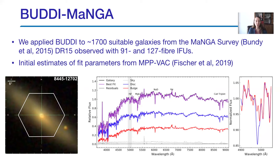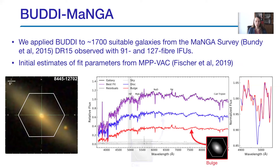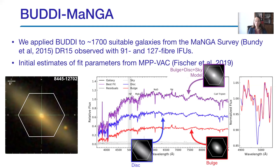We can see here an image of one of the MaNGA galaxies with the MaNGA field of view overlaid onto the SDSS image. On the right, in black, is the integrated spectrum from the MaNGA data cube. In red, we have the spectrum extracted from the bulge component. In blue is the spectrum extracted from the disk component. And in purple is the combined bulge plus disk plus sky spectrum, which you can see fits very well on top of the integrated light from the data cube.